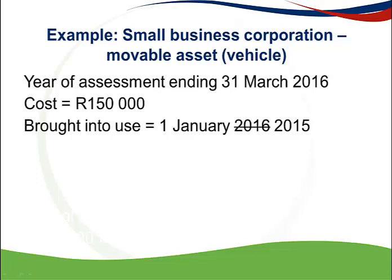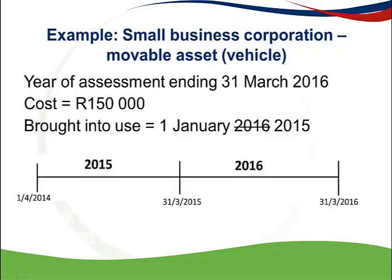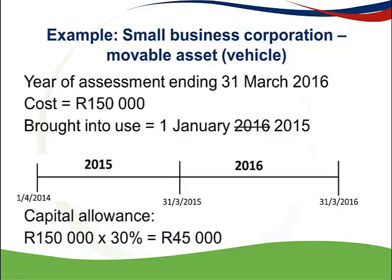Now assume the asset was brought into use on 1 January 2015, which is in the previous year of assessment. I will still use the 50/30/20% rule, but because the asset was brought into use in 2015, I would have claimed the 50% allowance in that year. So in the current 2016 year of assessment, I will claim the 30% allowance: 150,000 times 30% gives a 2016 deduction of 45,000. This is why a timeline is very useful — you can clearly see which percentage applies to each year of assessment.